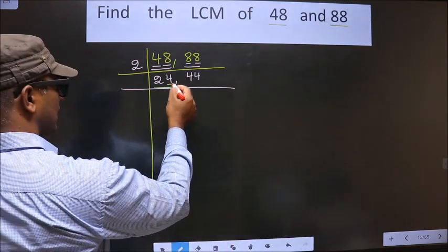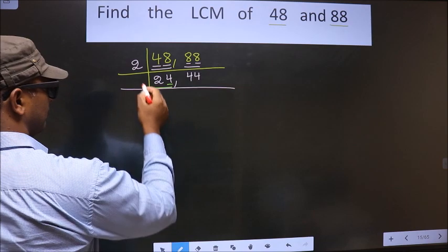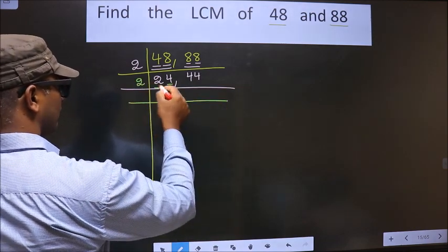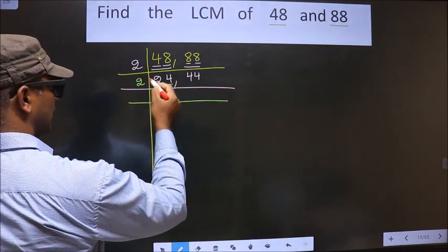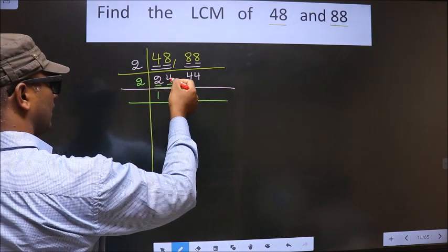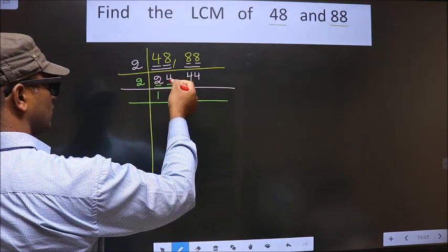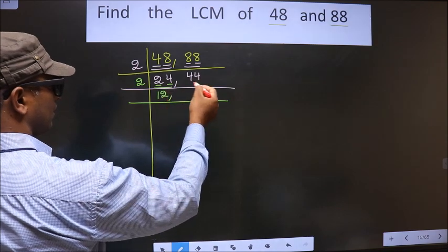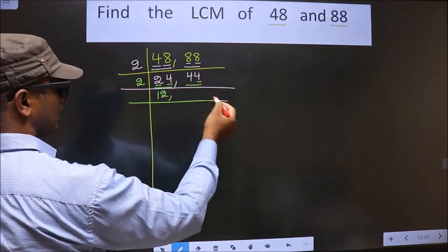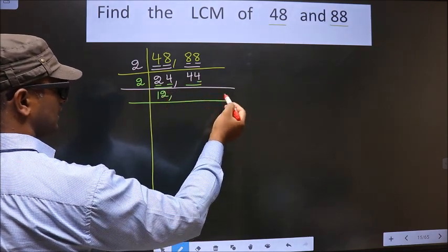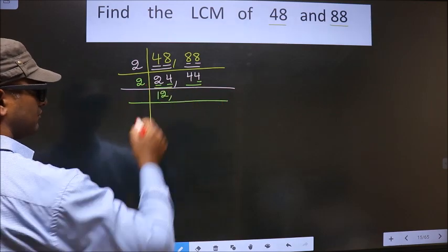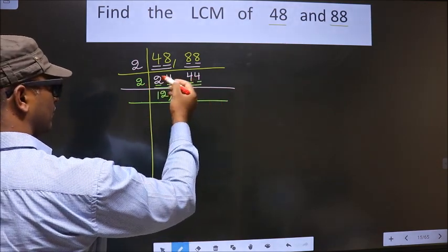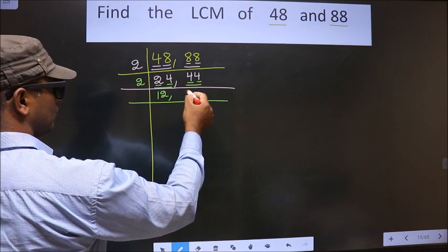Now, for this number, the last digit is 4 which is even, so we take 2 here. The first number is 2; we get 2 in the 2 table at 2×1=2. The next number is 4; we get 4 in the 2 table at 2×2=4. The other number has 4 in the last digit which is even, so this number is also divisible by 2. Here we have 4; 2×2=4.